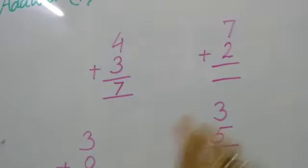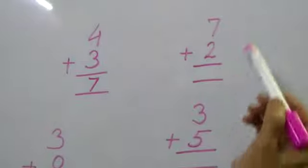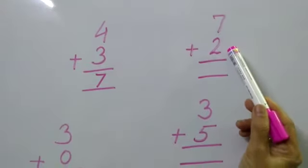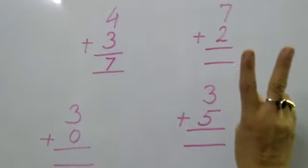Next sum is 7 plus 2. Upper number is 7. We will keep this digit in our mind and lower number is 2. So, we will stand 2 fingers.